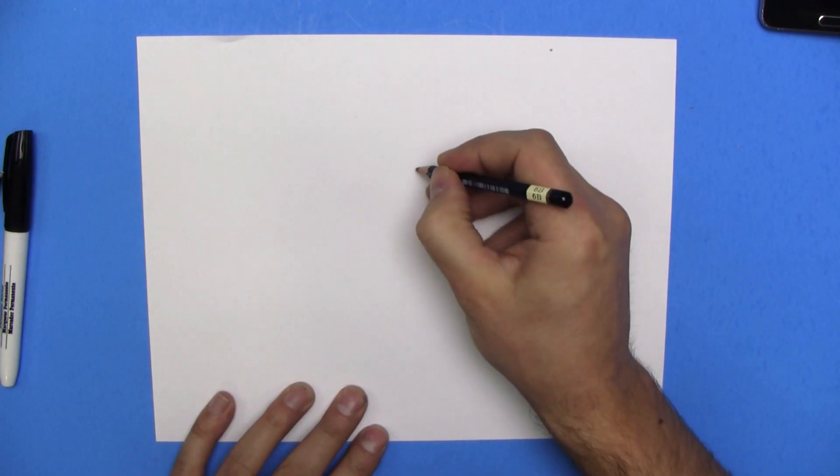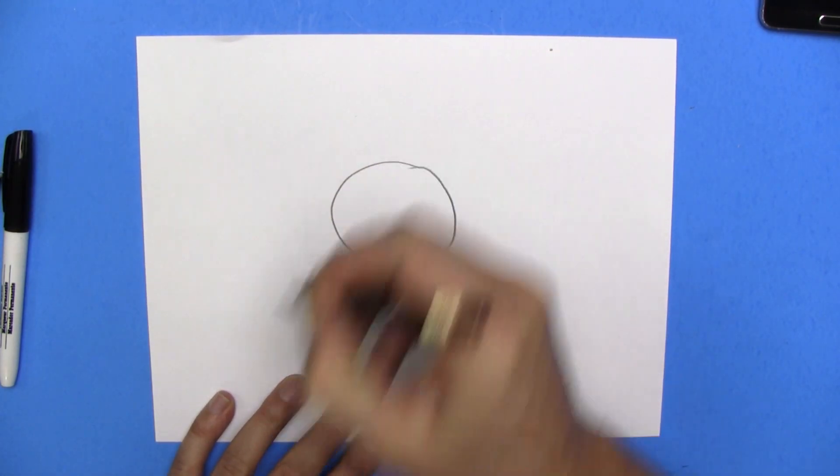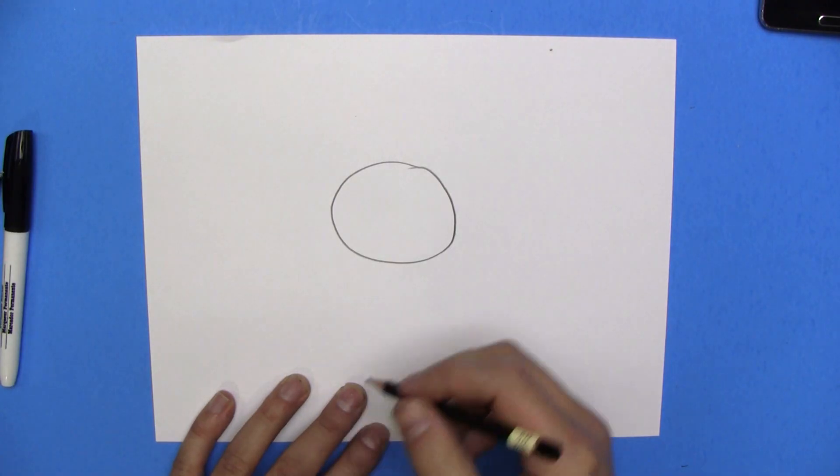So, let's start off with the head. Circle. Yep. That is awesome. We've got a circle.